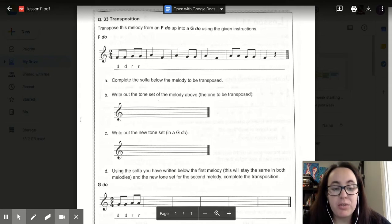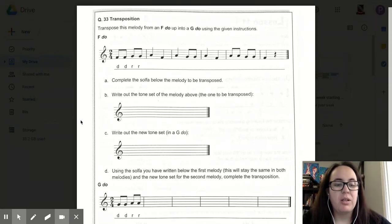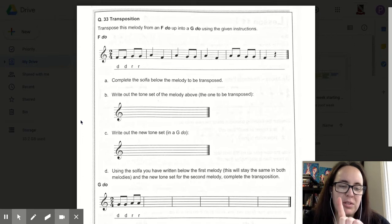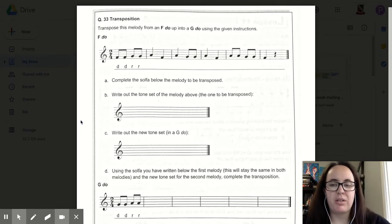Question 33 deals directly with transposition. Transposition is when we shift where DO is on the stave. In the last couple of lessons we've talked about F DO and G DO, and that's just telling you what the first note of the tone set is, whether it's an F on our treble stave or a G on our treble stave.